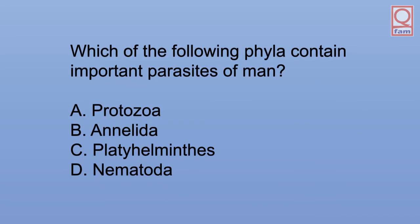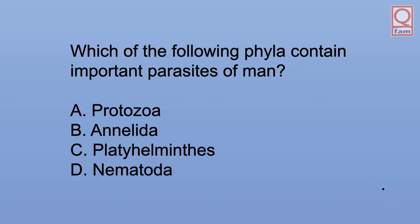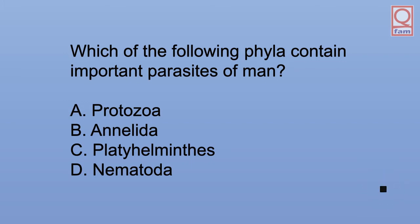Which of the following phyla contain important parasites of man? A. Protozoa. B. Annelida. C. Platyhelminthes. D. Nematoda. The answer is A, C, and D: Protozoa, Platyhelminthes, and Nematoda.